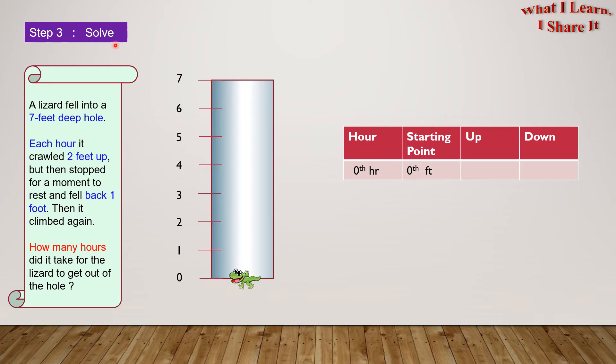Step 3. Solve. So as we can see from this diagram, the lizard is at the zeroth foot. In the first hour, it goes up to the second foot, but then it falls down to the first foot. In the second hour, it'll start from the first foot, and go up to the third foot, but then slide down to the second foot.